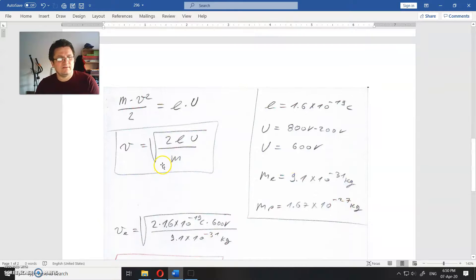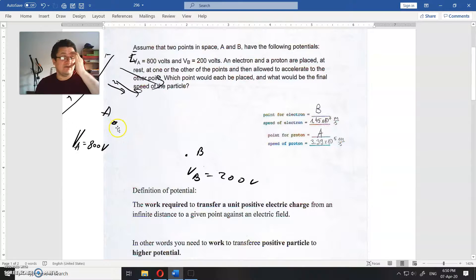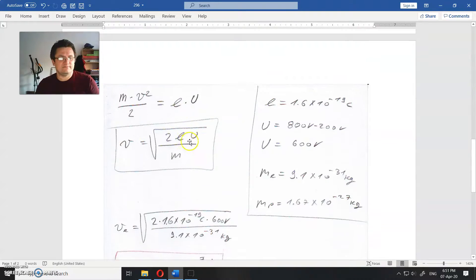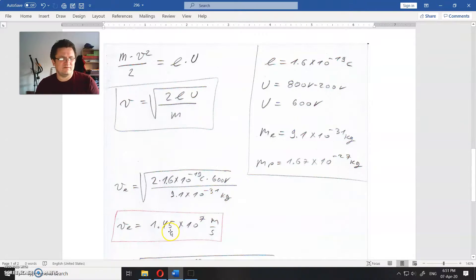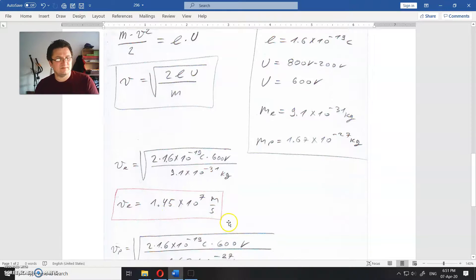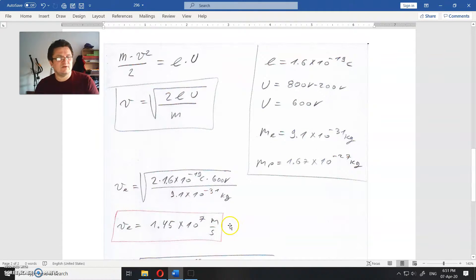So speed at point B, at point A, when the electron moves freely from B to A will be, I place everything here, will be 1.45 times 10 to the 7 meters per second. That is speed of the electron.